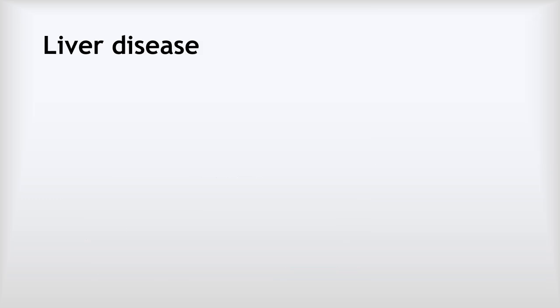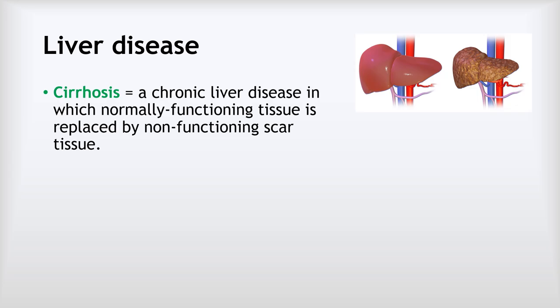Our next non-communicable disease is liver disease. The main liver disease we need to know about is called cirrhosis — a chronic liver disease in which normally functioning tissue is replaced by non-functioning scar tissue. A chronic disease is one that you live with and can't be cured. Looking at the picture here, this is a healthy liver, and on the right is one with cirrhosis, and you can see it really doesn't look healthy at all.